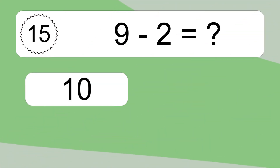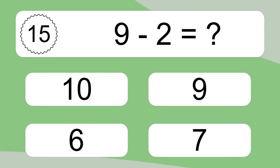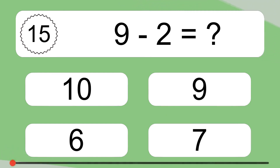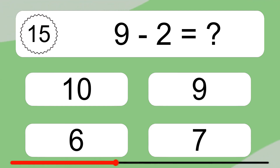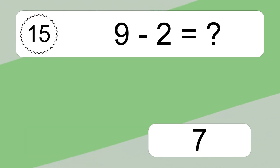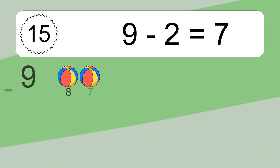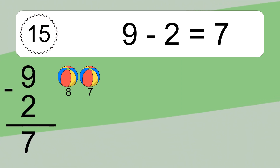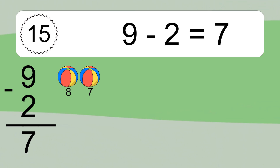9 minus 2 equals what? 9 minus 2 equals 7. Let's count it! 8, 7.